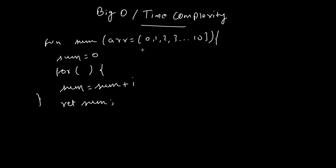Here is an example. We have an array with 11 elements starting from 0 to 10, and we have a function called sum which initializes a variable called sum. Then we have a for loop for traversing this array using pseudo-code, adding every element to the sum and returning it — calculating the sum of all elements.